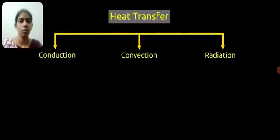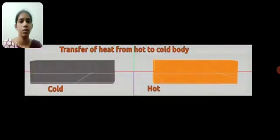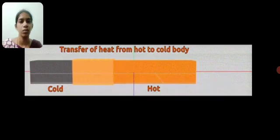Heat can be transferred from one object to other by conduction, or convection, or radiation. When heat from one object gets transferred to other object by direct contact, it is known as conduction.